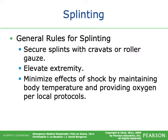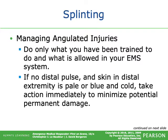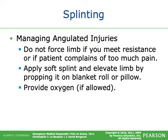Secure splints with cravats or roller gauze and elevate the extremity. Minimize effects of shock by maintaining body temperature and providing oxygen per local protocol. Do only what you have been trained to do and what is allowed in your EMS system. If there is no distal pulse and the skin is pale or blue and cold, take immediate action — try to realign the extremity to anatomical position to restore the pulse. Do not force the limb if you meet resistance; if the patient complains of too much pain, stop. Apply a soft splint and elevate the limb.